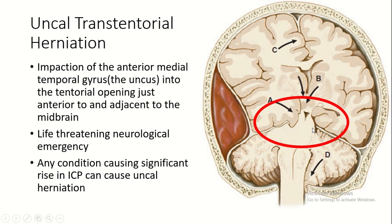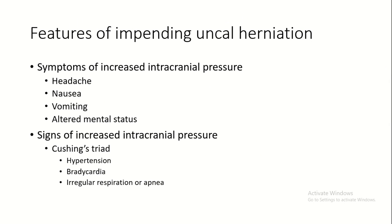This leads to compression of the midbrain and surrounding structures, which causes various types of symptoms. It's a life-threatening neurological emergency, and any condition causing significant rise in ICP, like intracranial bleed or intracranial space-occupying lesion, can cause uncal herniation. The features of impending uncal herniation include symptoms of increased intracranial pressure: headache, nausea, vomiting, and altered mental status, as well as Cushing's triad — hypertension, bradycardia, and irregular respiration or apnea.